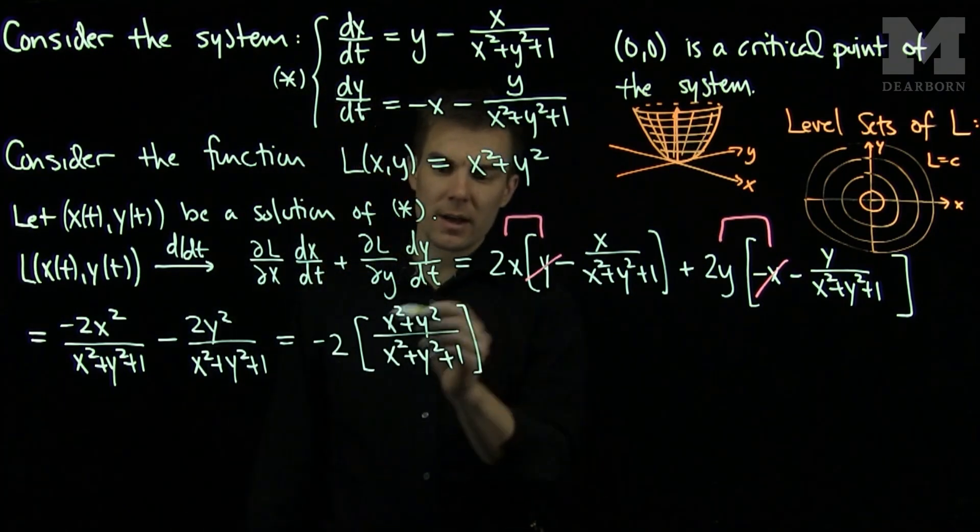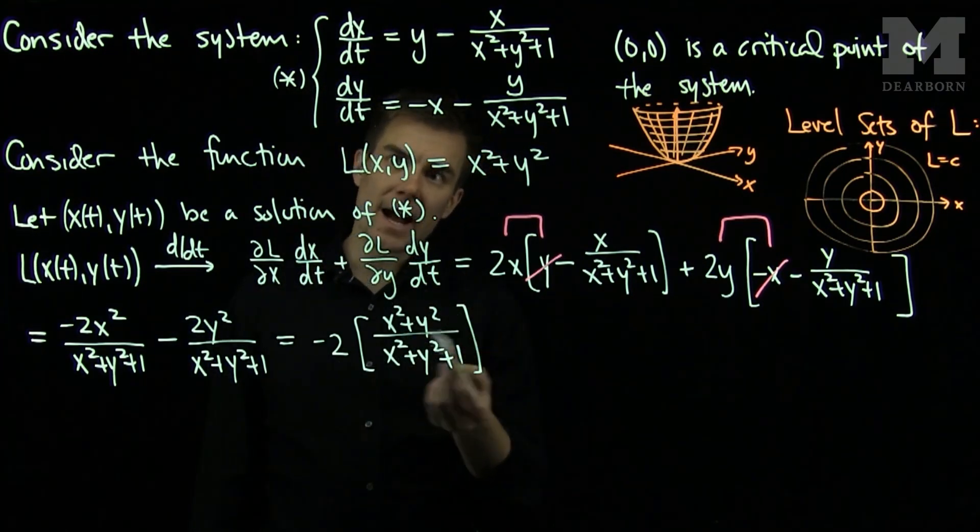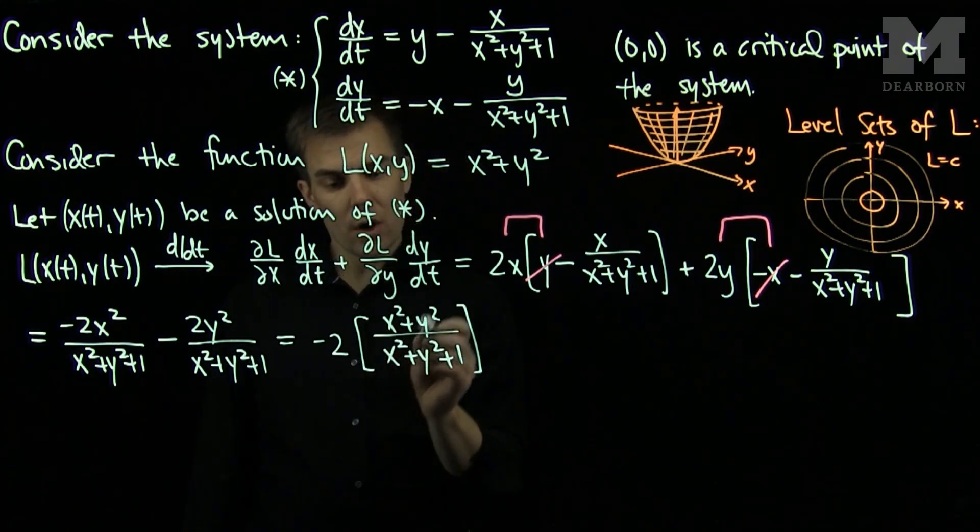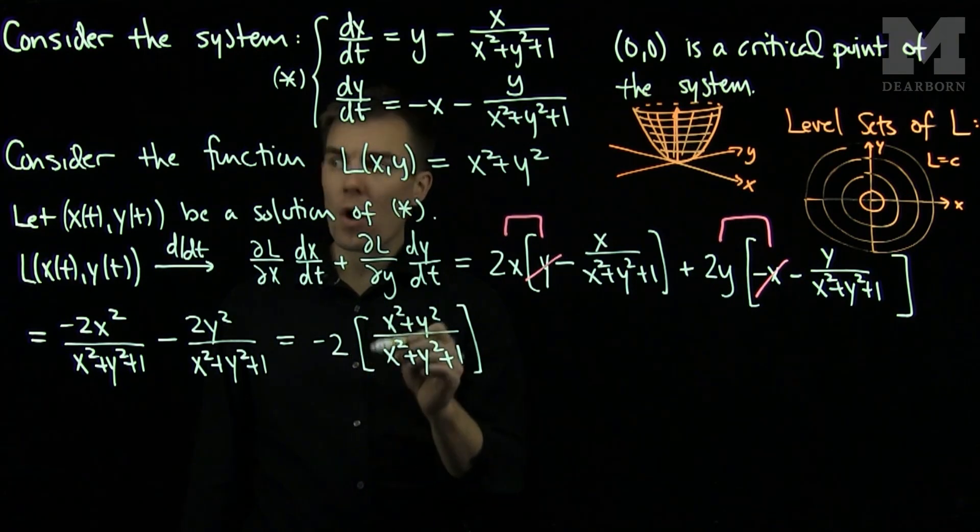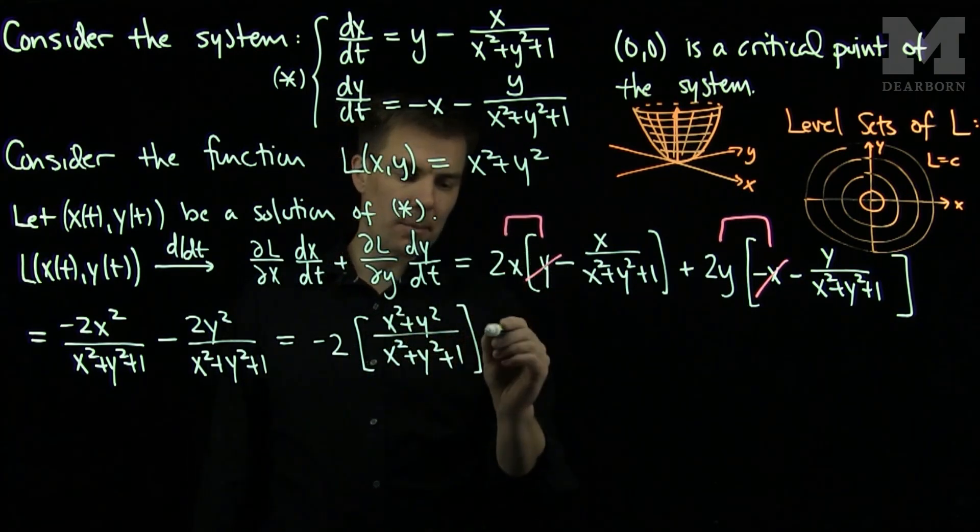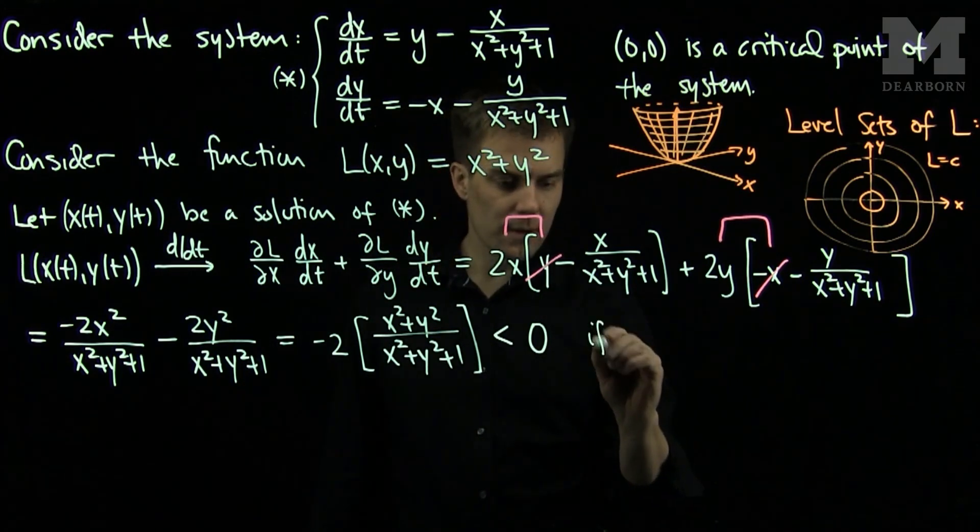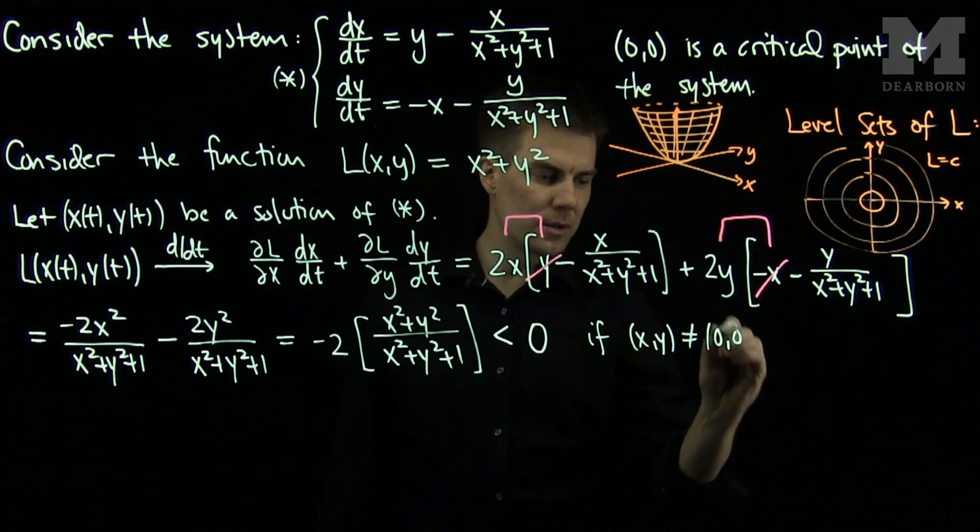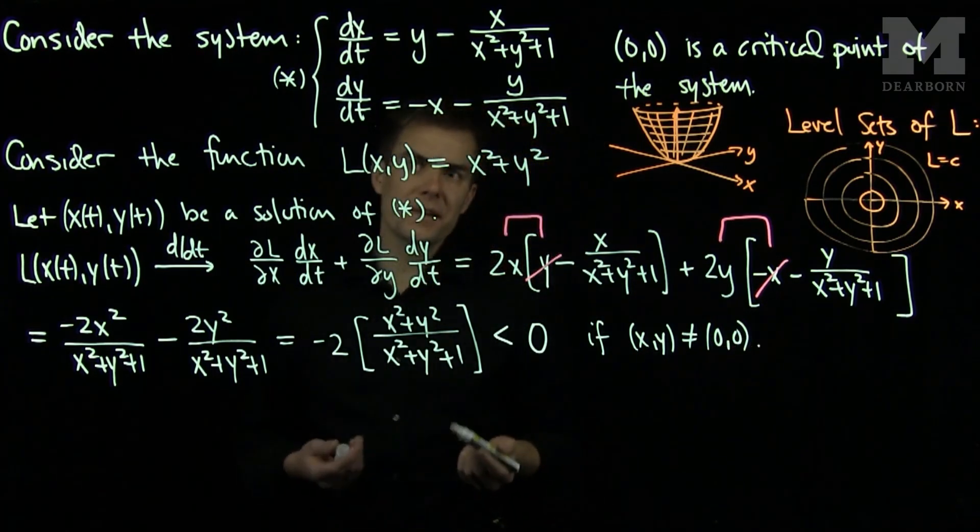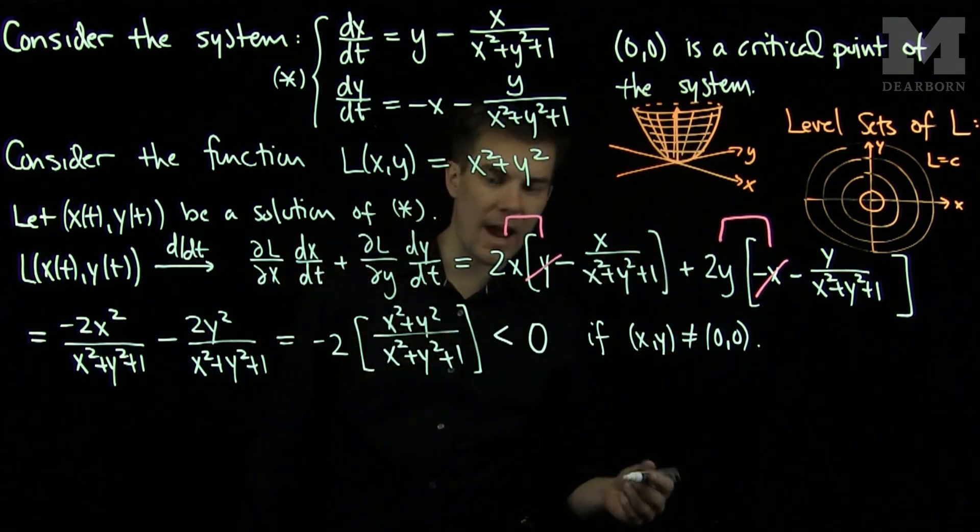And this expression in the brackets is always positive, unless x and y are both 0. So this positive quantity over here, being multiplied by -2, will always generate a negative number. So this is strictly less than 0 if the point (x,y) is not (0,0).